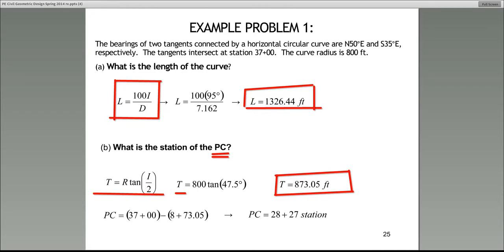Subtract the tangent from the station of the PI. The station of the PI is 37+00. Pay very close attention. We're going to subtract the tangent in terms of stations. The tangent length is 873.05 feet. In terms of stations, that's eight 100-foot complete stations plus 73.05 change. So when you subtract 8+73.05 from 37+00, this is what you end up with.